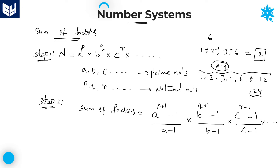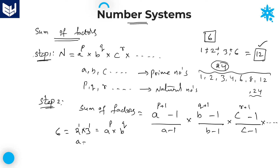Now let me verify with the small example of 6 — whether we get sum of factors equal to 12 using this formula. Here, 6 equals 2 into 3, which is 2 power 1 into 3 power 1. It is in the form a power p into b power q, with only two prime numbers. So a equals 2, b equals 3, and p equals q equals 1.